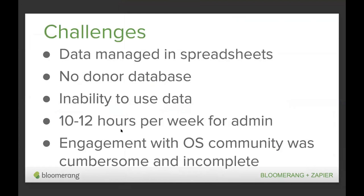Now that you have a sense of the work MIB Agents does, let's talk about their journey to full system automation. Only two years ago, MIB Agents was managing their constituent and fundraising data in spreadsheets. They were experiencing a growing inability to find the information they needed or successfully perform outreach to their community — a common pain point. They had the data they needed but it was messy and unusable. They estimated spending about 10 to 12 hours per week managing their data files, and it never seemed to be enough. They also wanted to improve outreach and increase engagement with members of the osteosarcoma community.